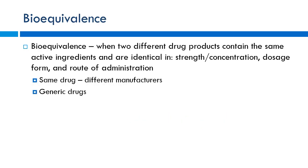So, bioequivalence. Based on the name, what would you think it means? It's biologically equivalent between two different drugs essentially — this is how we come up with generic drugs. The benefit of generic drugs is that they're cheaper. Drug companies spend a lot of money to put a drug on the market, and they need to recoup that cost over a 20-year patent period. Once that 20 years is up, the patent is lost and generic manufacturers can come in. You don't want a discount knockoff drug — you want something that's going to work just as well.